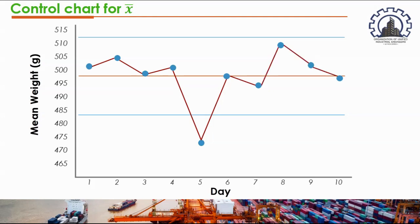The X-bar chart is now complete. We can see that the sample mean for day five is clearly below the lower control limit, meaning the process mean is out of statistical control. As a result, we recommend removing day five's data and taking corrective action to identify and rectify what went wrong. That sums up the report — thank you for watching.